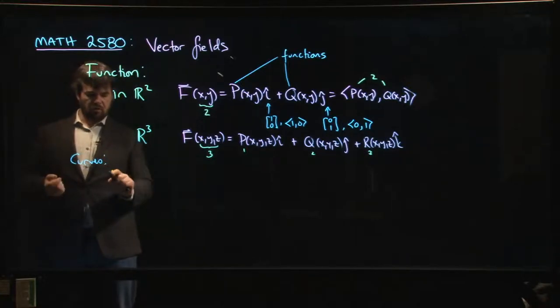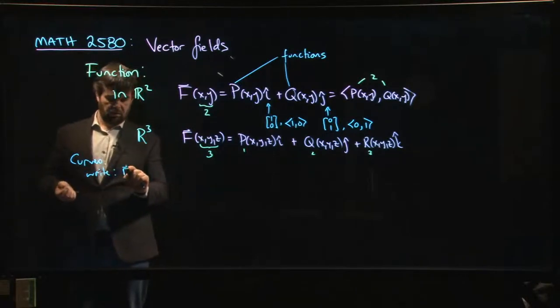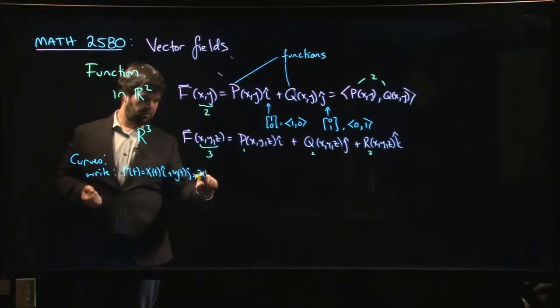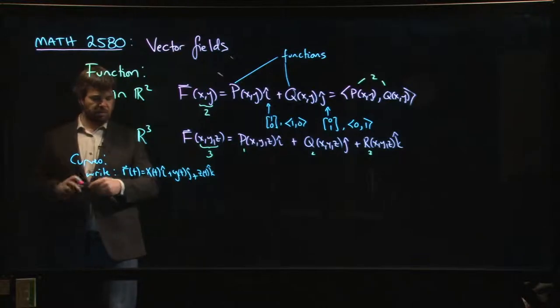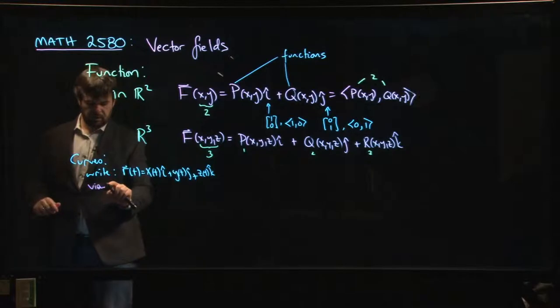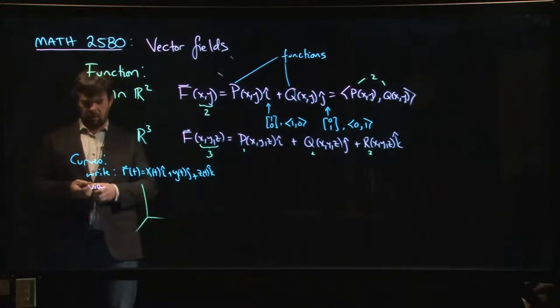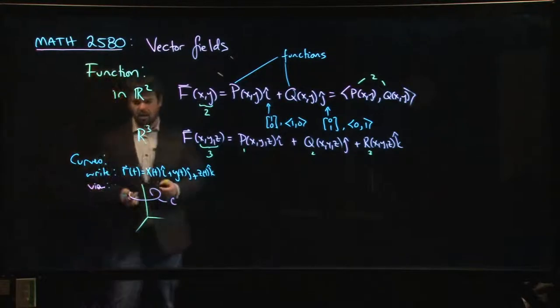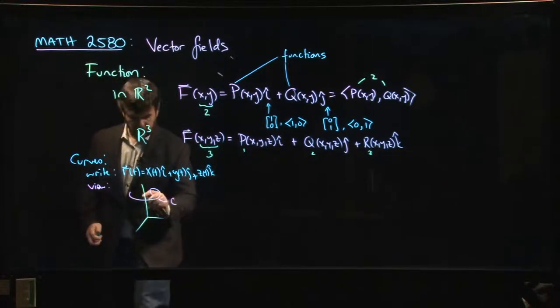We usually allow ourselves to blur the lines between points and vectors. We tend to abuse notation where it's convenient. We do this all the time with curves. We usually write r(t) = x(t)i + y(t)j + z(t)k as a vector valued function, but when you view the curve you picture it as a set of points in your three-dimensional coordinate system.